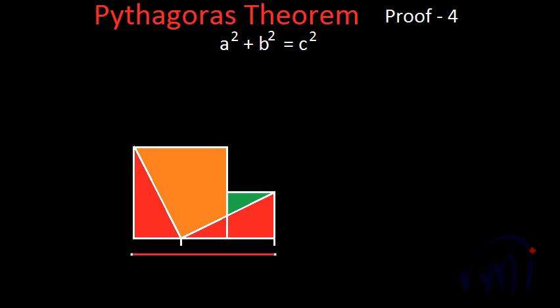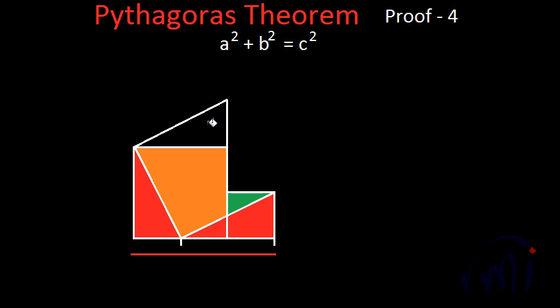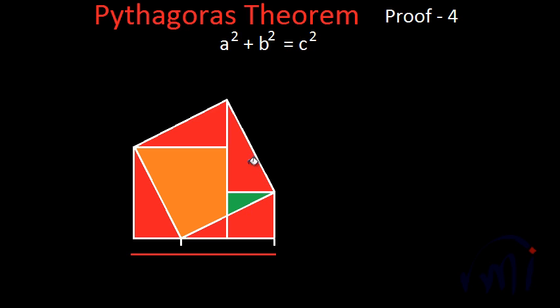And now I'm going to do some more construction. I'm going to take this side which is equal to b and paste it over here. Next, I'm going to draw a line from this point to this point. This is also a right angle triangle with sides equal to a and b adjacent to the right angle, and it will also be congruent to this red triangle. And now if I do this construction, again we will get a triangle which is congruent to all the other red triangles.